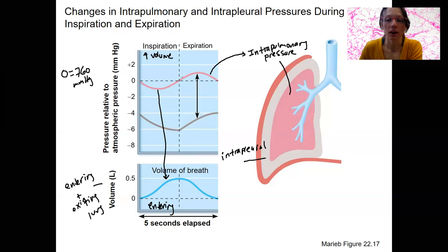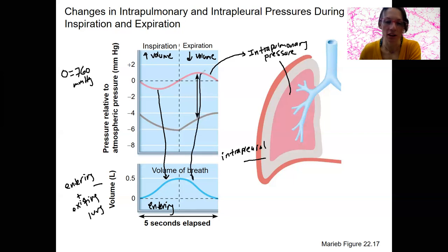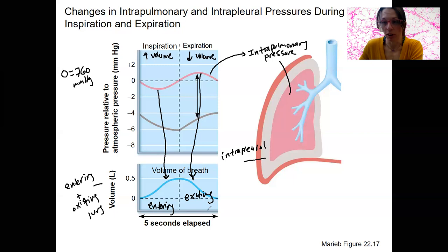As we expire fully, those muscles relax. That decreases thoracic volume, which causes pressure to rise inside the lungs and thoracic cavity, and air is forced out. So air is exiting. This is all occurring over about five seconds for a resting respiratory rate. The curve of intrapulmonary pressure decreases during inspiration and increases during expiration.